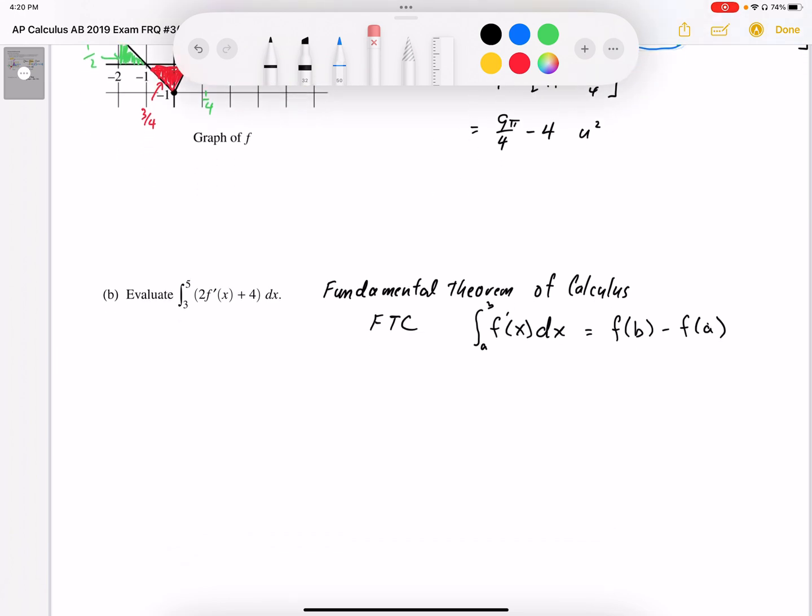When I write this out, I end up with the area under the graph of 2f'(x)dx plus the area under the graph of y equals 4. I'll do the first part here. This becomes 2 times...